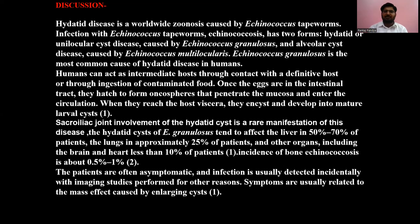Once the eggs are in the intestinal tract, they hatch into oncospheres and then penetrate the mucosa into the circulation. When they reach the host viscera, they encyst and develop into mature larval cysts. Echinococcus granulosus tends to affect the liver in 50 to 70 percent of cases, the lungs in approximately 25 percent of patients, and other organs including the brain and heart in less than 10 percent of patients.